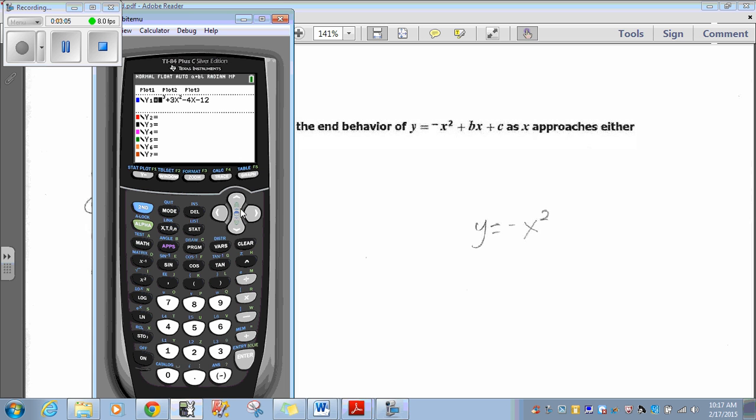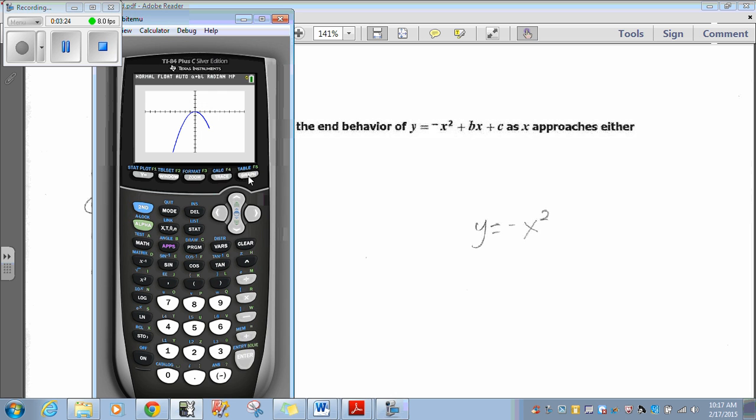Well, easiest way to do this, graph on your calculator y equals negative x squared to see what it looks like. So we'll go here. I clear this out. Y equals negative x squared. Because it doesn't matter what else comes after that, the negative x squared is basically going to give you the shape of the graph.